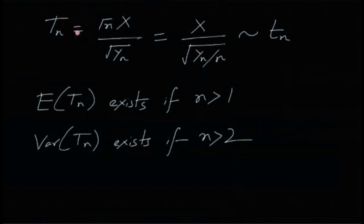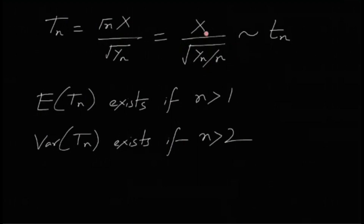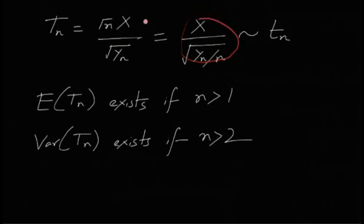Now, Tn = √n · X / √Yn = X / √(Yn/n). The numerator is standard normal and the denominator is the square root of a chi-squared with n degrees of freedom divided by n. Therefore Tn follows the Student's t-distribution with n degrees of freedom.